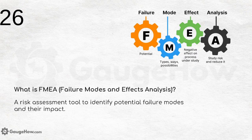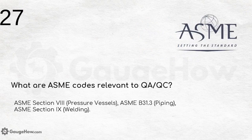What is FMEA — failure modes and effects analysis? It is a risk management and assessment tool used to identify potential failure modes and their impact. It examines: the potential of failure, the modes or ways it might occur, the negative effect on the process under study, and the analysis required to study and reduce those risks.